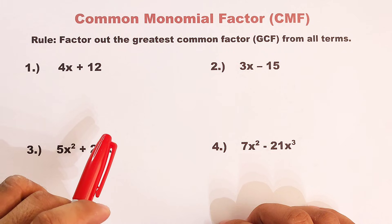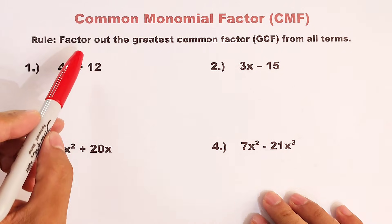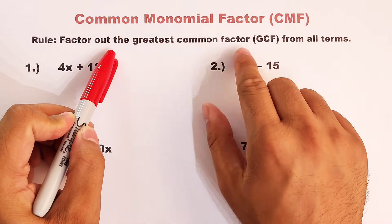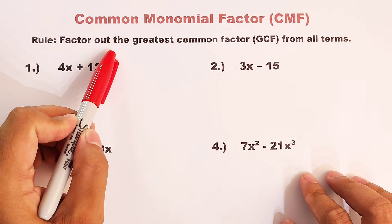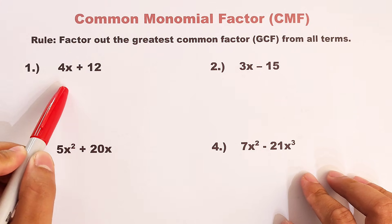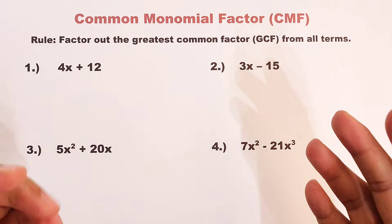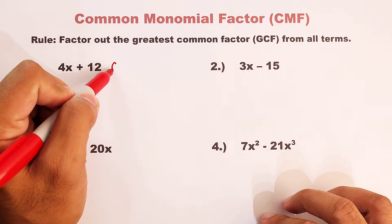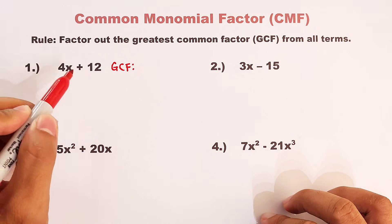So the basic rule on how to perform common monomial factoring in factoring polynomials is that we need to factor out the greatest common factor or the GCF from all terms. So for you to figure out what is meant by this rule, let's have example number one. We have 4x plus 12, so the first thing we need to do is to identify what is the greatest common factor between the two terms 4x and 12.